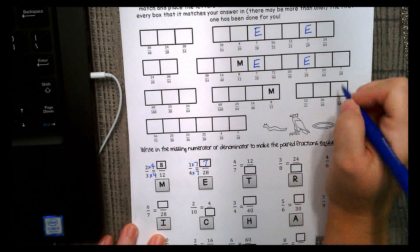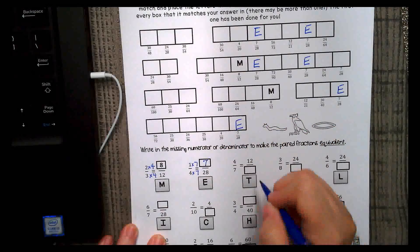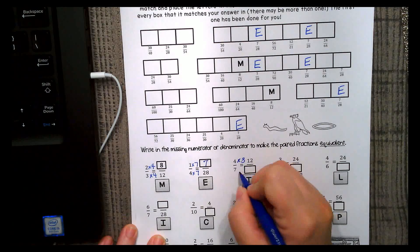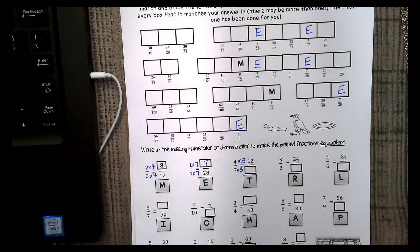All right, what times 4 gives me 12? 3. Whatever you do to the bottom, you have to do to the top. Whatever you do to the top, you have to do to the bottom.